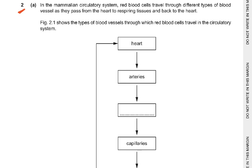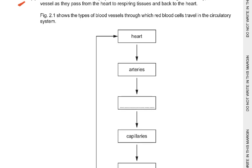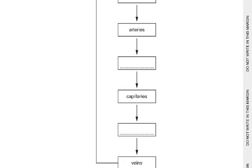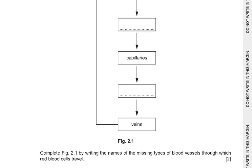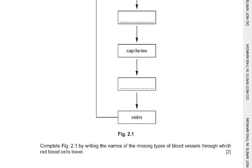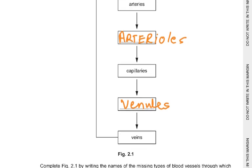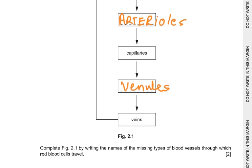Question 2: In a mammalian circulatory system, red blood cells travel through different types of blood vessels from the heart to respiring tissues and back. Complete Figure 2.1 with the missing blood vessel types. The sequence is: heart → arteries → arterioles → capillaries → venules → veins. The two missing answers were arterioles and venules — spelling must be correct.